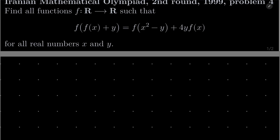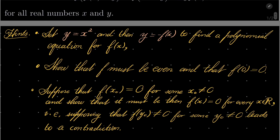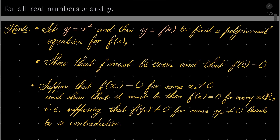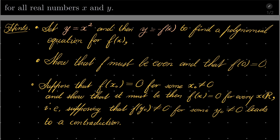It's a nice problem. Here are my hints. First, try setting y to be x squared, and then try setting y to be minus f of x, to find a polynomial equation for f of x. From that you should be able to show that our function must be even and that f of 0 is 0. And finally, to eliminate most of the possibilities, suppose that if our function has some non-zero zero — so in other words, for some non-zero x₀, f of x₀ is 0 — then our function must be constantly 0. Supposing that f of y₀ is not 0 for some non-zero y₀ leads to a contradiction. Give this problem a try and I will see you in just a minute.